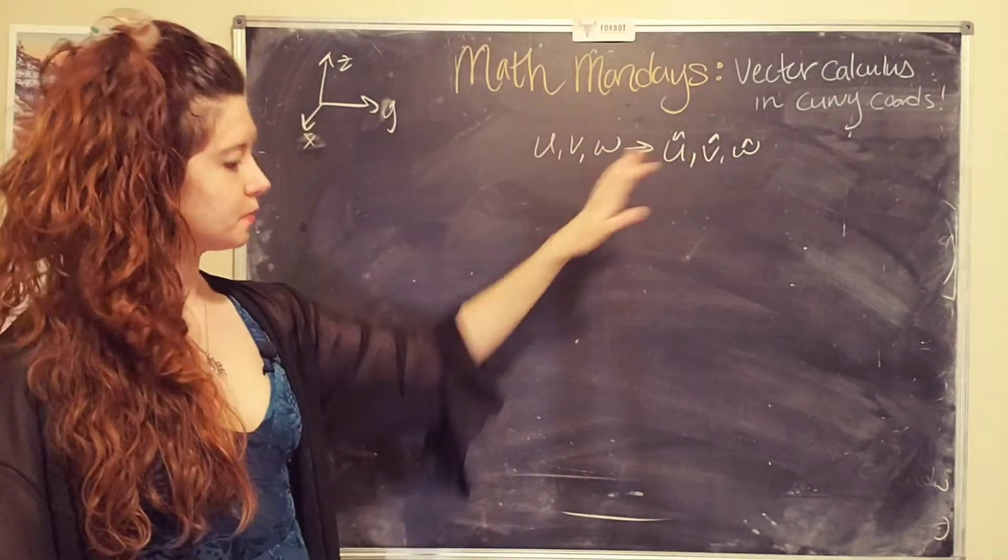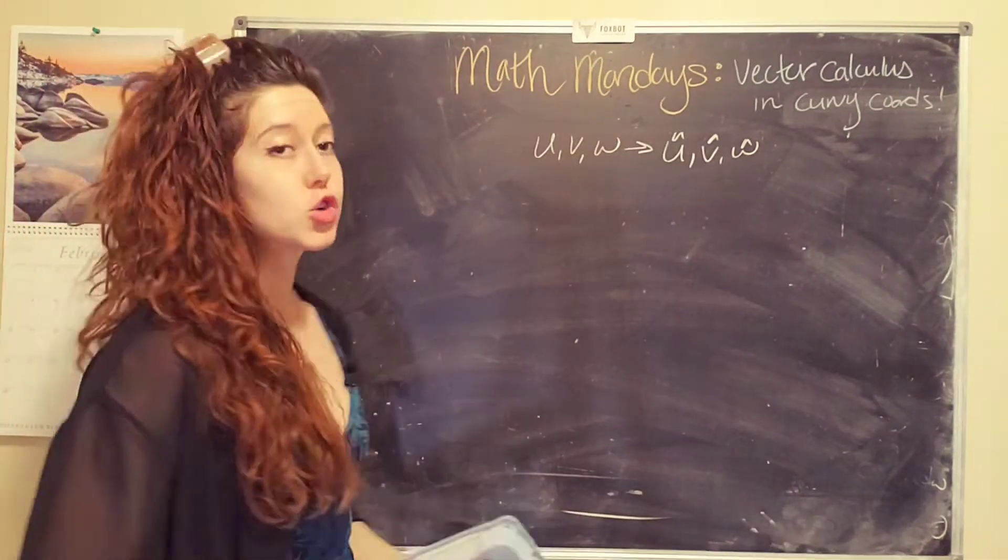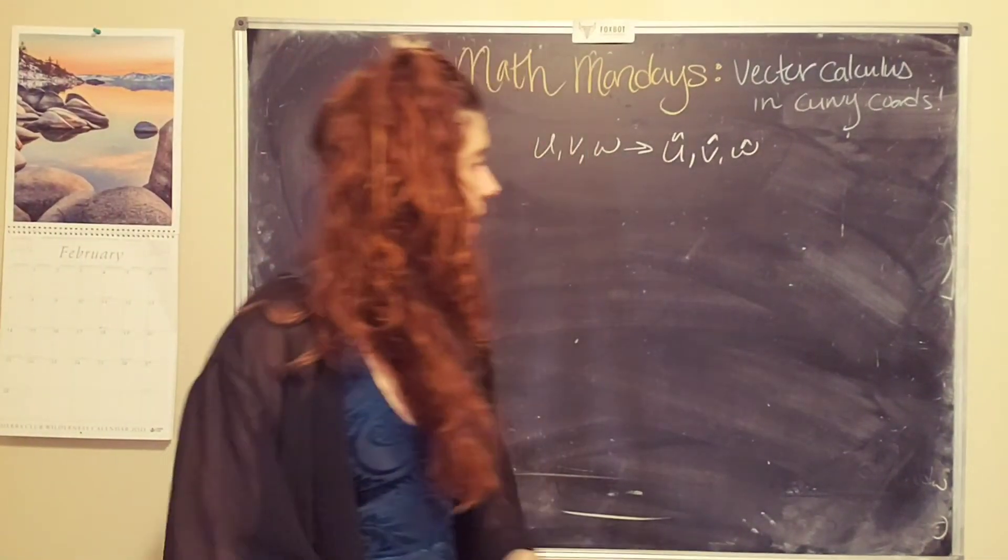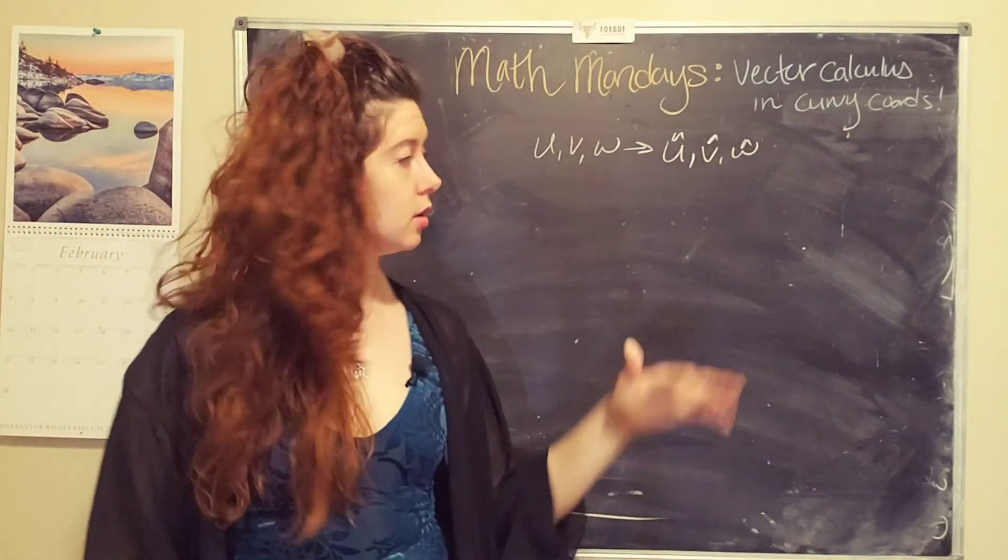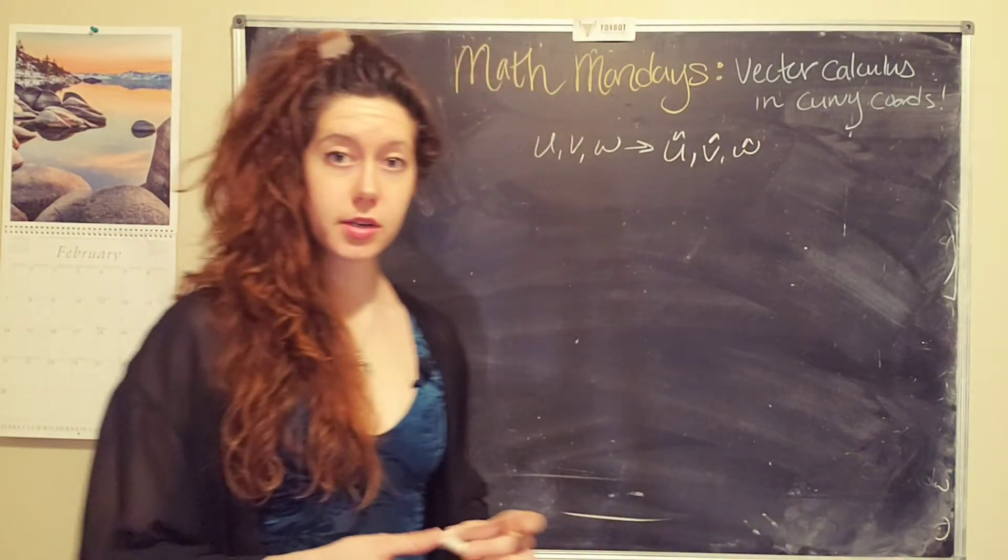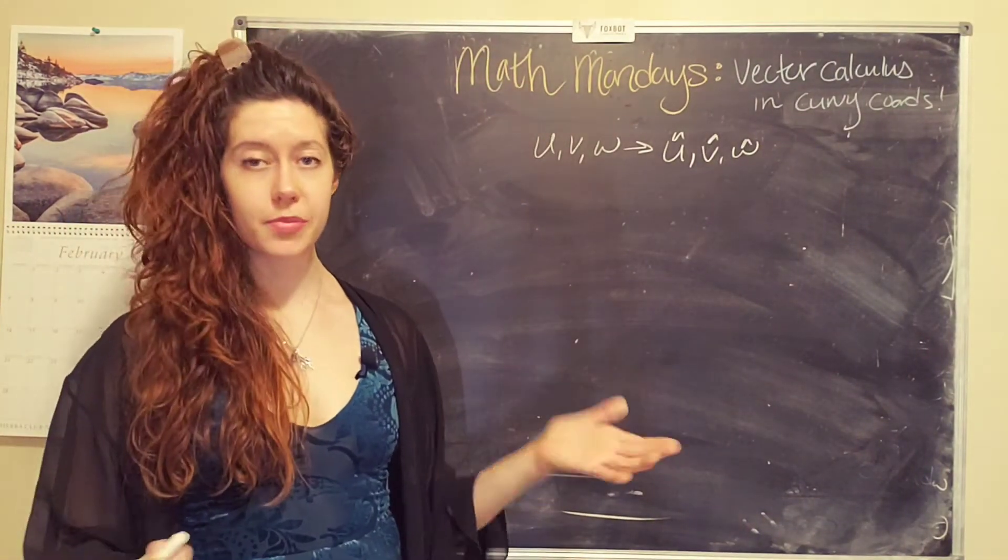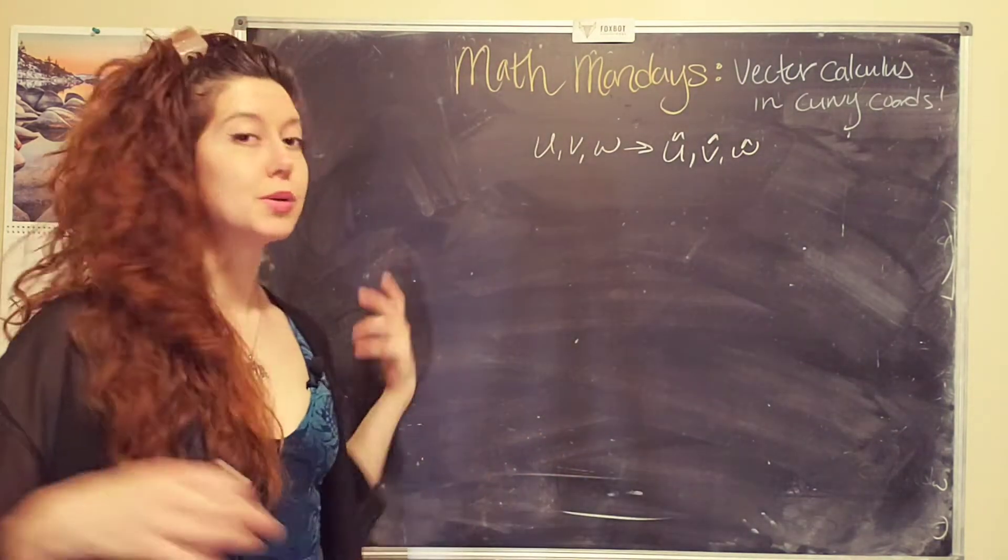So these are perpendicular, and the unit vectors are functions of position, meaning that as these coordinates change, these also change. So in Cartesian, x, y, z stay the same. The x hat doesn't really change position.